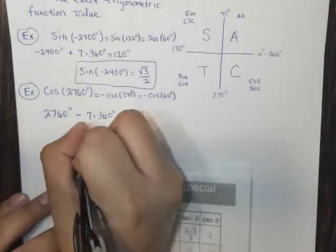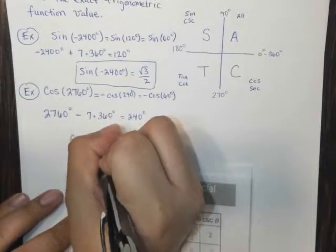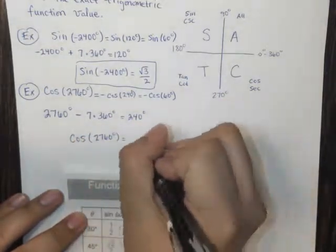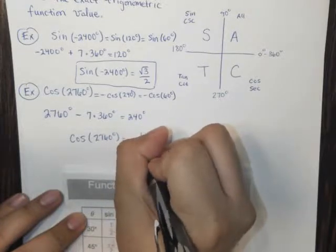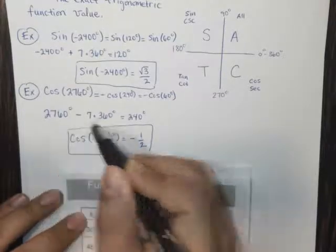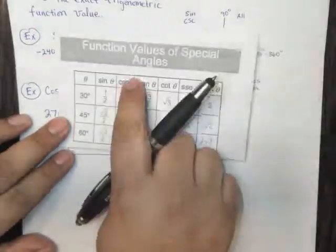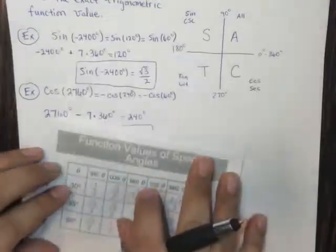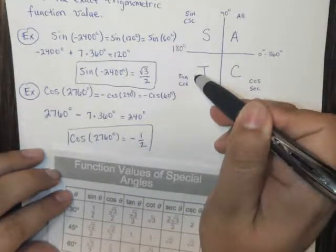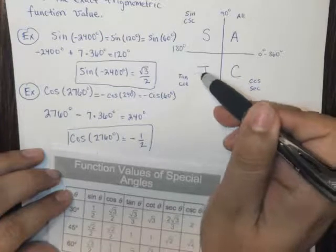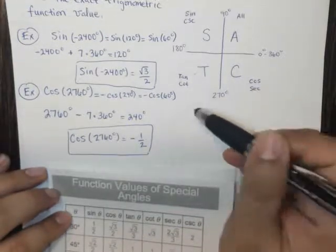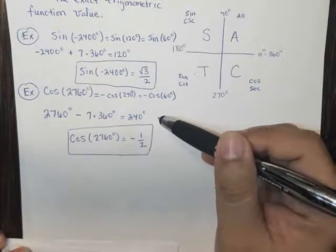So the answer for the cosine of 2,760 degrees is going to be the negative 1 half that we got from the negative cosine of 60. So cosine 60, again, is 1 half. But because it's in this quadrant, quadrant 3, cosine here is negative. Only tangent and cotangent there are positive. So this is the answer for this one.